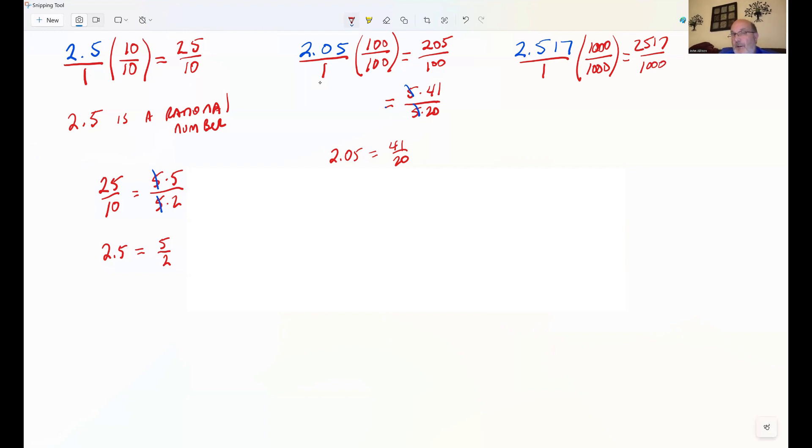Now, I don't know the factors of 2,517. So I'm going to tell you that's an integer though, and the 1,000 is an integer. So we've shown that 2.517 is a rational number.